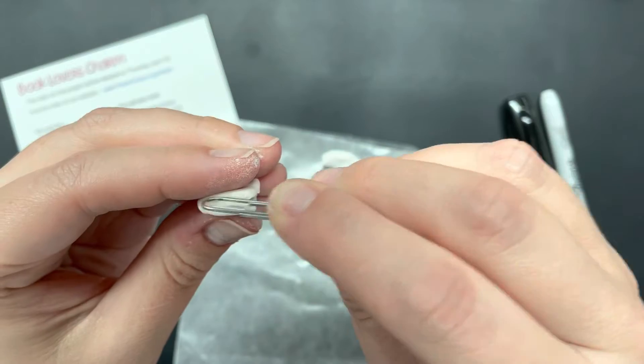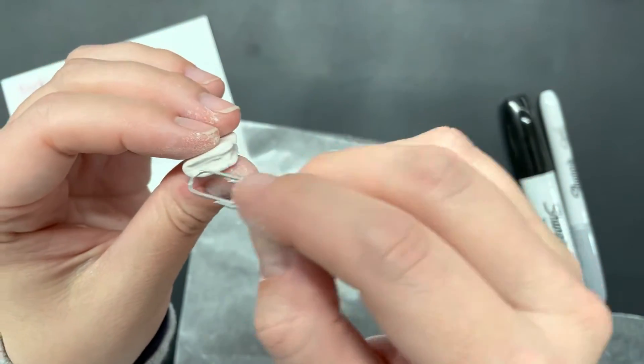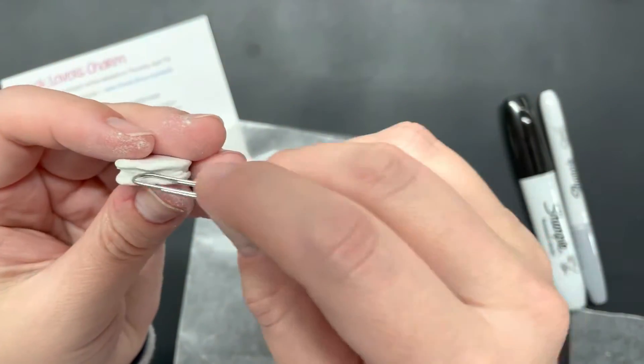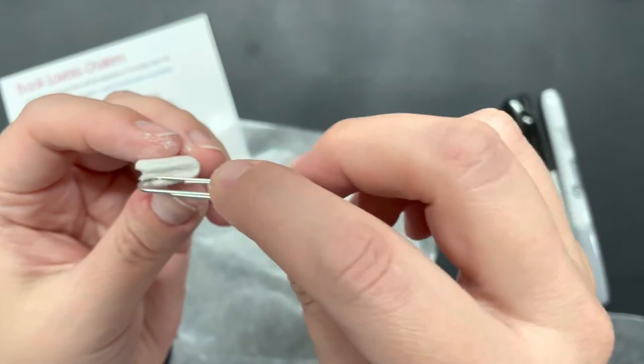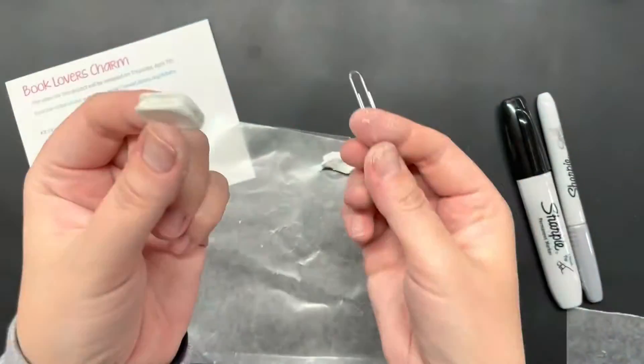You can just go back through and keep tweaking until you're happy with your book. As a final step, I just kind of brushed my paperclip along the sides, trying to give that little rough look like pages. And then I'm actually going to allow the book to dry.